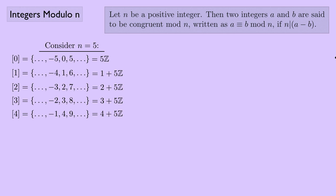Now I want to look at something a little different. We've looked at congruence before; now I want to look at doing arithmetic with these equivalence classes. For example, suppose I have the equivalence class of 1 plus the equivalence class of 2 — would that equal the equivalence class of 3? Let's put a question mark and figure it out.